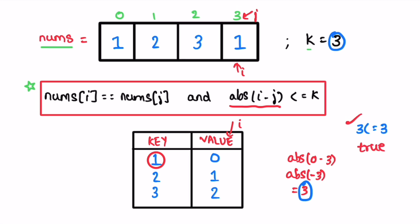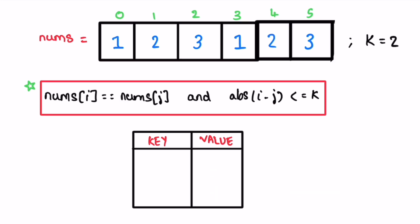Now let's try another example where the output will be false. We iterate through the same array. i is pointing at the first element — it's not present in the map, so we set its key and its index as value. Next element is 2, not present — insert 2 with index 1. Next element is 3, not present — set its key and index as value.